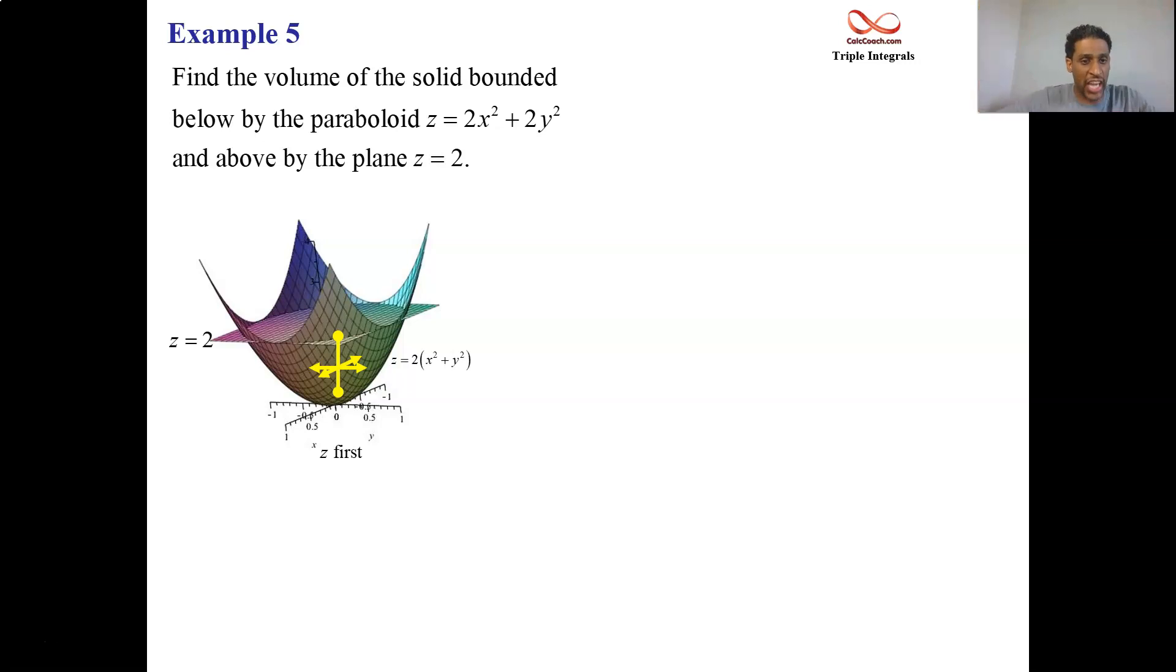When we look at the shadow in the xy-plane, when we project this onto the xy-plane, we're going to get a circle. Because the region in the xy-plane is going to be circular, we want to do this in cylindrical.